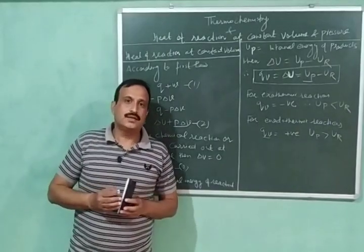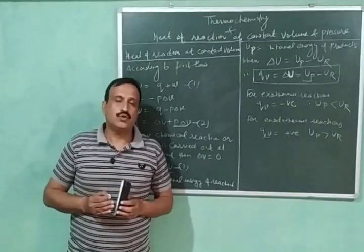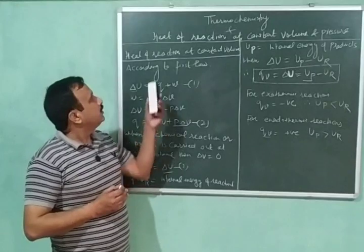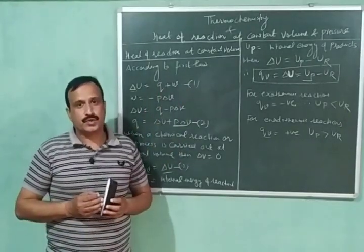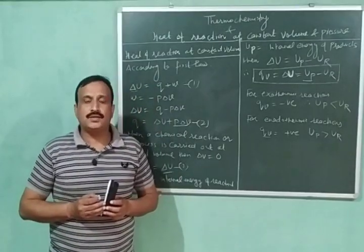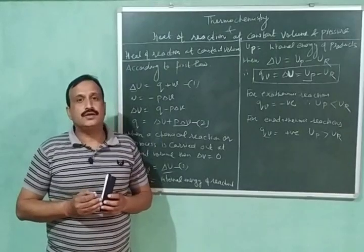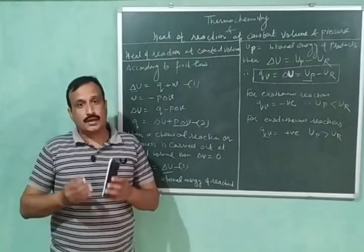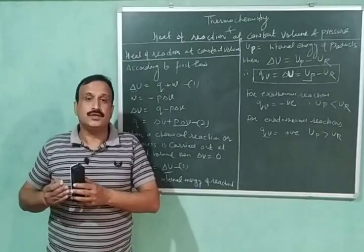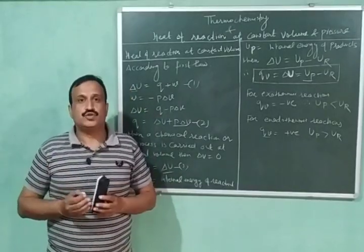Hello everyone, welcome back and you are watching DMG Chemistry Classes. In today's video, I am going to discuss thermochemistry and I am also going to explain heat of reaction at constant volume and pressure. The branch of chemistry which deals with heat changes — that is heat evolved or absorbed during chemical reactions — is called thermochemistry.